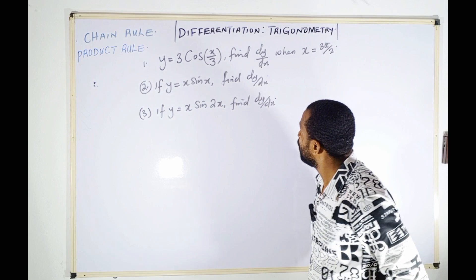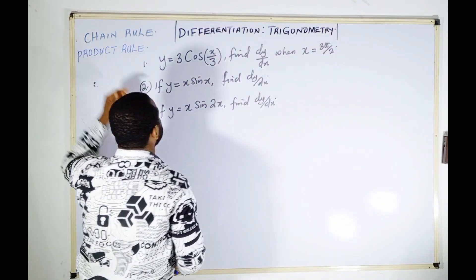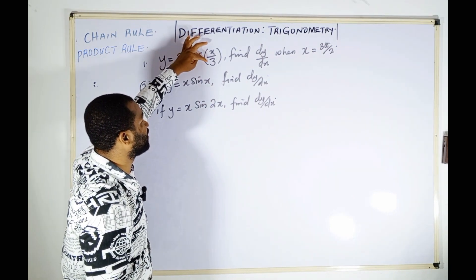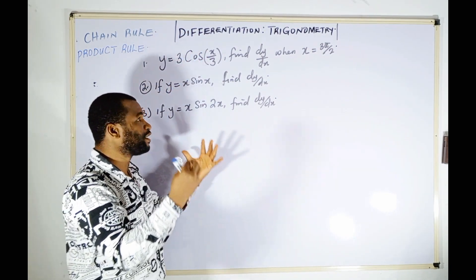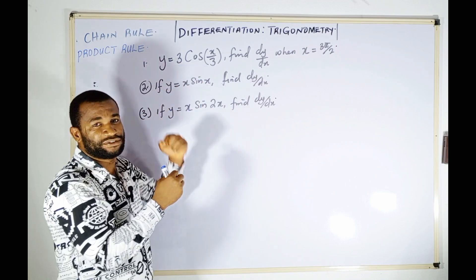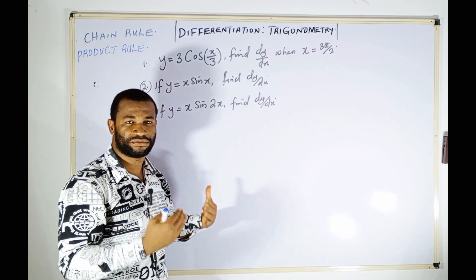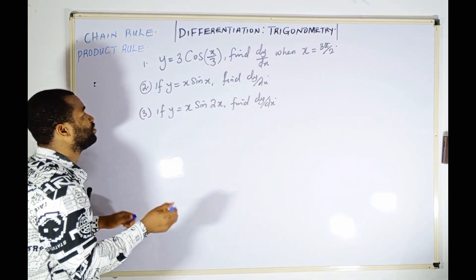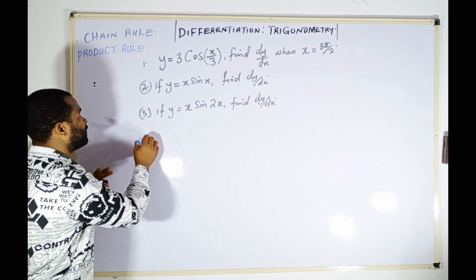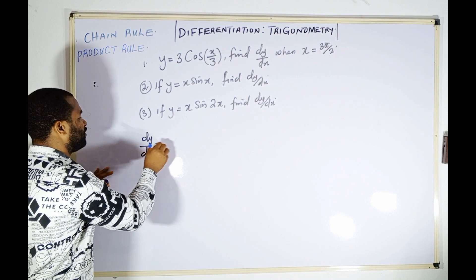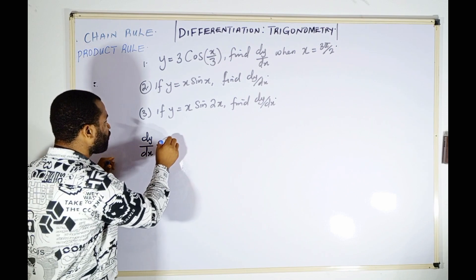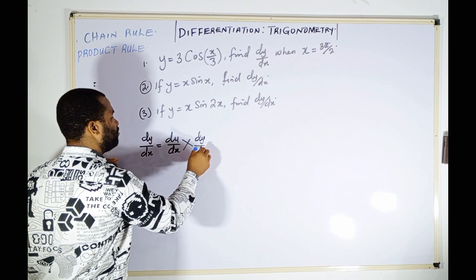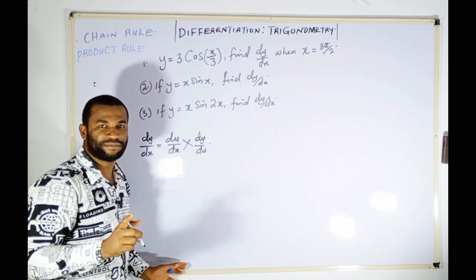This is a chain rule problem because x/3 is an algebraic function inside a trigonometric function—we call them function of function. For chain rule, dy/dx = du/dx × dy/du.